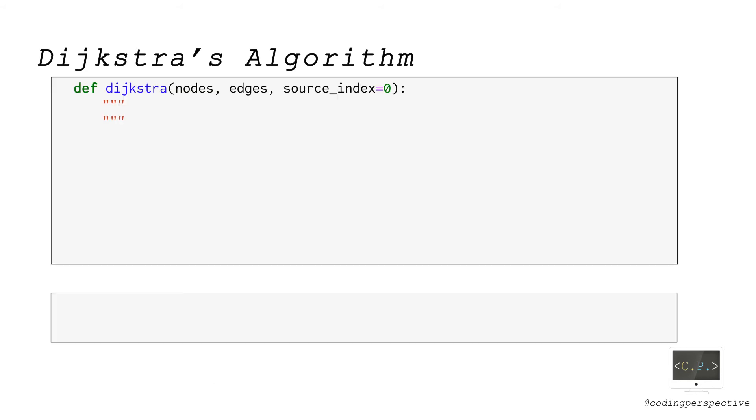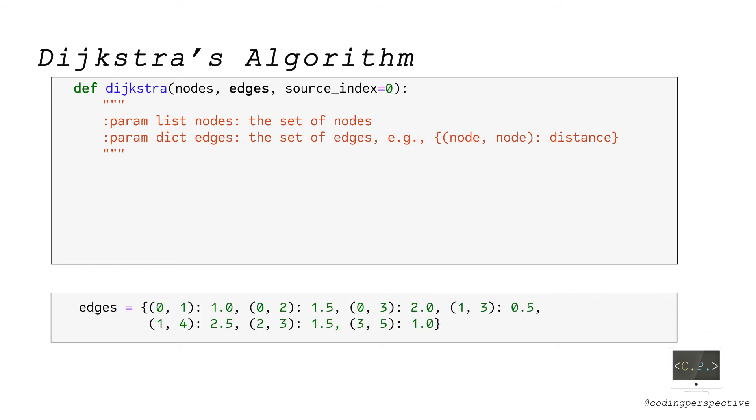Now let's code this algorithm in Python by writing a function called Dijkstra. This function takes three inputs. The first input is the set of nodes, which is defined by nodes list. For our small problem, it is initialized as follows. The second input is the set of edges, which is defined by the edges dictionary where keys are the node pairs and values are the distances. We can initialize edges as follows for our small problem.